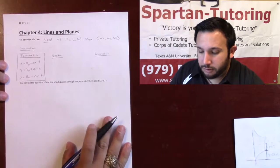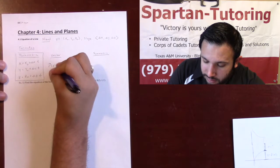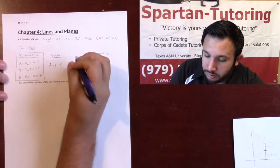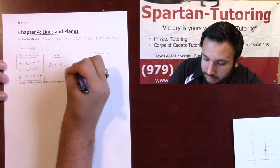If they want it as a vector equation, you're going to write it as r of t, so it would be some vector, is going to equal your x-naught, y-naught, z-naught